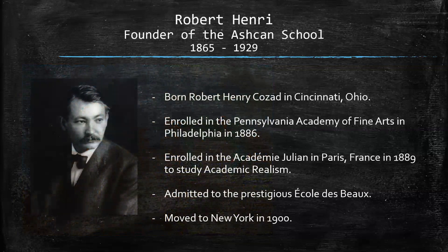Who is Robert Henri? Robert Henri was a founder of the Ashcan School. He was born Robert Henry Cozad in Cincinnati, Ohio, and he enrolled in the Pennsylvania Academy of Fine Arts in Philadelphia in 1886. Around that time, he also enrolled in the Académie Julien in Paris, France in 1889 to study academic realism — so he has a very technical background. He was also admitted to a prestigious French school, but his true home was in New York, and he moved to New York City in 1900.